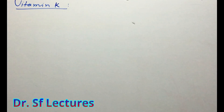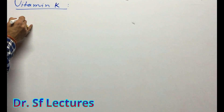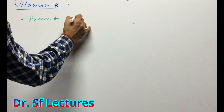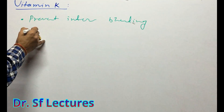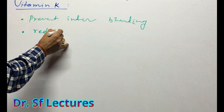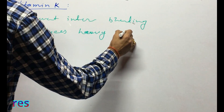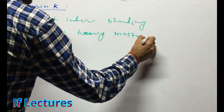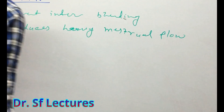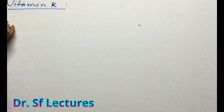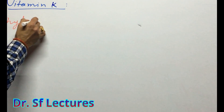Now we are going to talk about Vitamin K. What is the physiological role of Vitamin K? Vitamin K will prevent our internal bleeding. In females, it will reduce heavy menstrual flow.